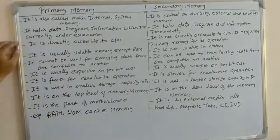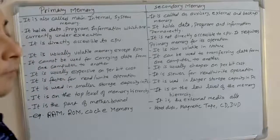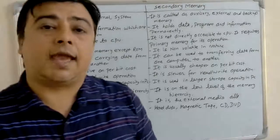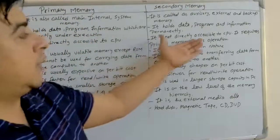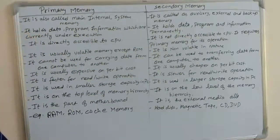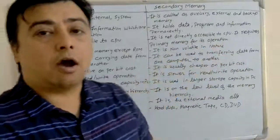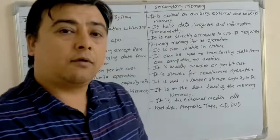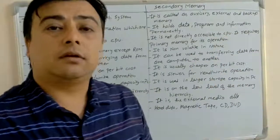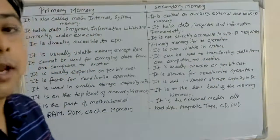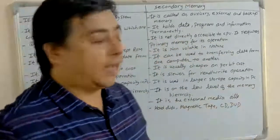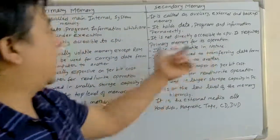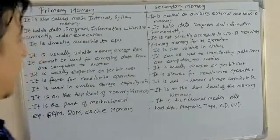Primary memory is directly accessible to the CPU. But secondary memory is not directly accessible to the CPU — it requires primary memory for its operation. For read and write operations, without primary memory, the secondary memory cannot be accessed.